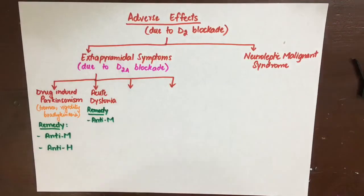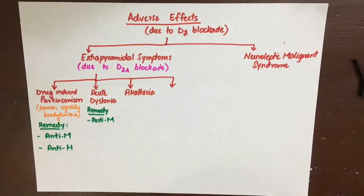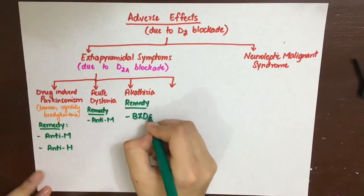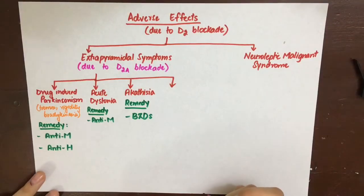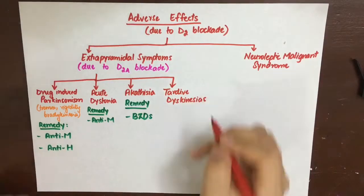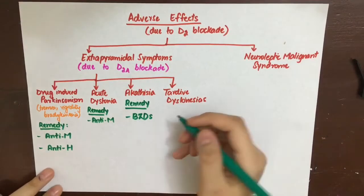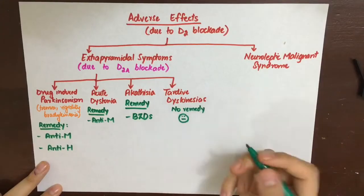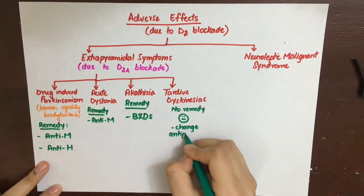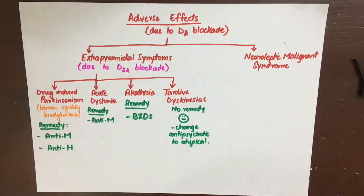The third extrapyramidal symptom is akathisia — a state of extreme restlessness where the patient cannot sit or stand still and is continuously pacing. This hyperactivity is due to hypersensitivity of the remaining receptors after dopamine blockade, and the remedy is treating the patient with benzodiazepines. The last extrapyramidal symptom is tardive dyskinesia — involuntary movements of orofacial muscles, for example tongue protrusion or grimacing. There is no medical remedy for tardive dyskinesia; the only option is to switch to an atypical antipsychotic.